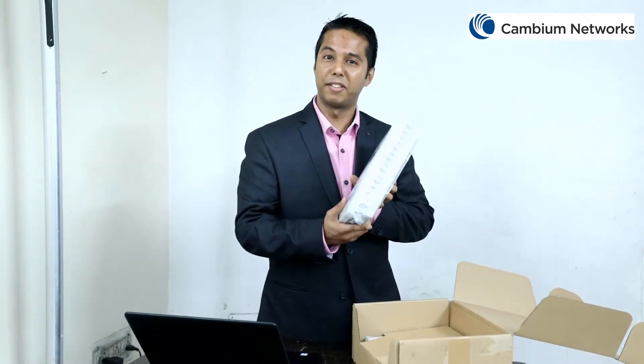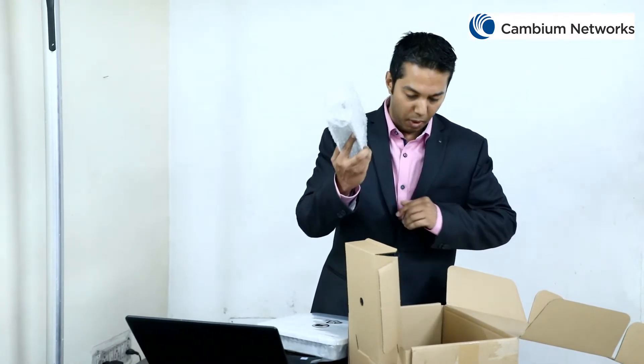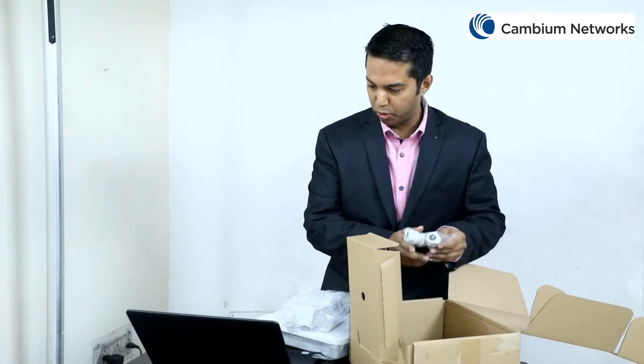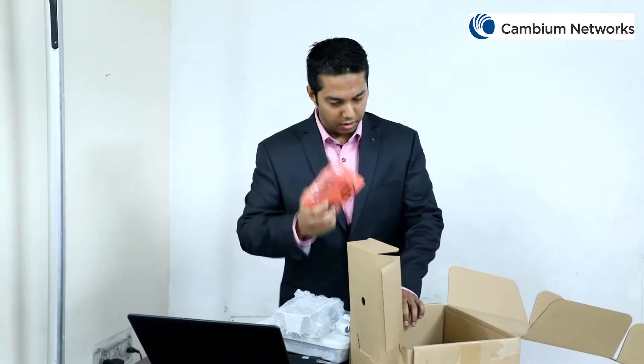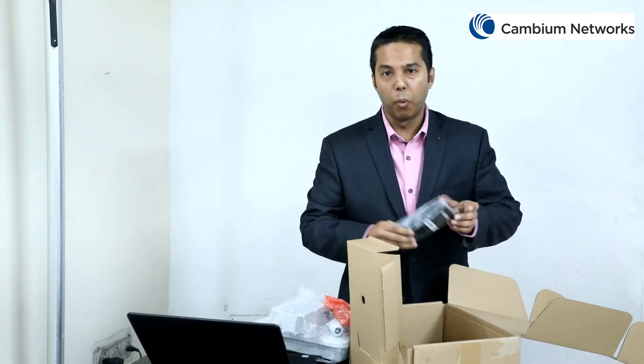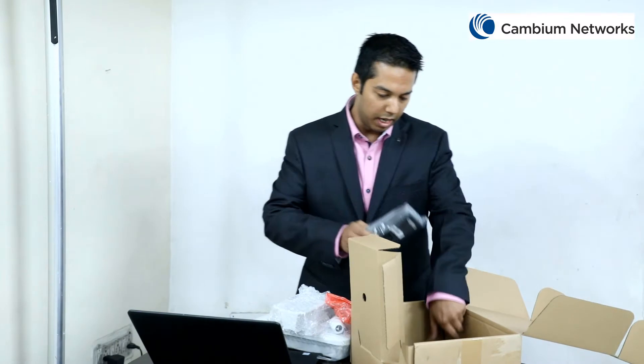This box comes with the instruction document, the access point itself, and also it comes with the wall mount mounting bracket, two IP67-grade cable glands, two hose clamps, a 30W or 56V gigabit power injector, and an optional power cord.